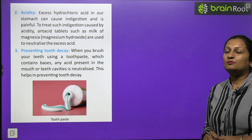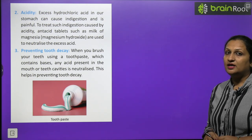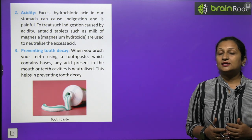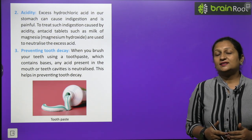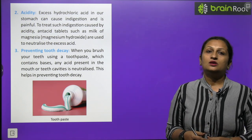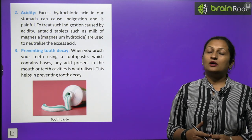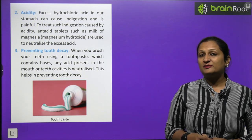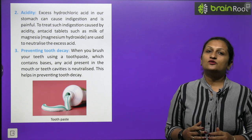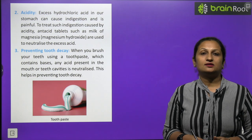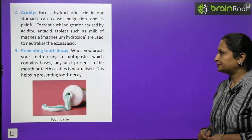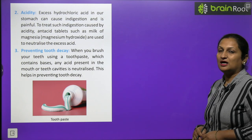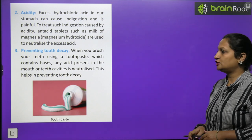Preventing tooth decay. Children, when you eat food, you know there are bacteria present in your mouth. These bacteria, what do they do? They eat your leftover food which is stuck to your teeth. And when they do this, they release an acid. And if this acid keeps staying on your teeth, it will corrode your teeth. You may get cavity. So what do we do? After eating food, mother says go and brush your teeth. We brush with toothpaste. What is in toothpaste? Toothpaste has base in it. What does it do? It reacts with this acid and neutralizes it, and our tooth is saved from decay. When you brush your teeth using a toothpaste which contains base, any acid present in the mouth or teeth cavities is neutralized. That helps in preventing tooth decay.